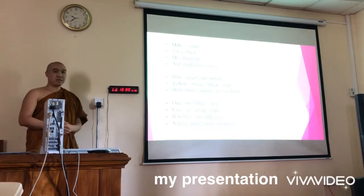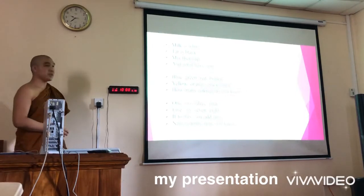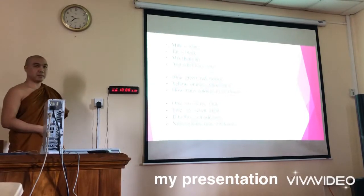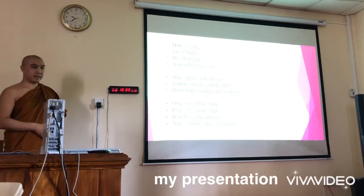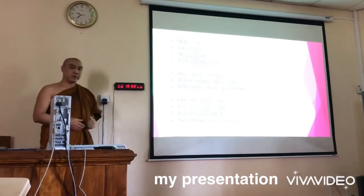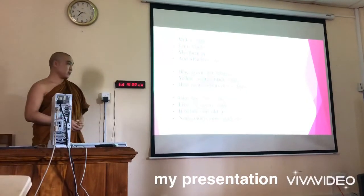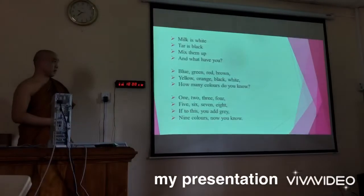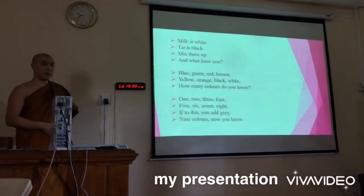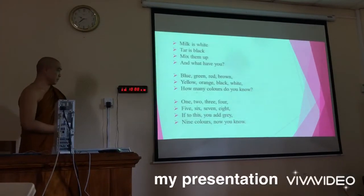Milk is white. Tar is black. List them up and what you have: blue, green, red, brown, yellow, orange, black, white. How many colors? Do you know?